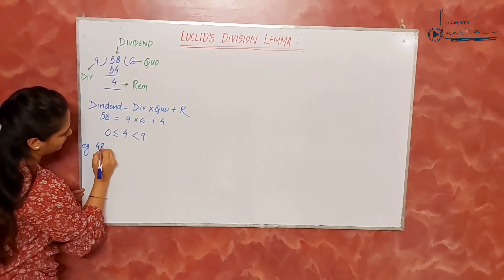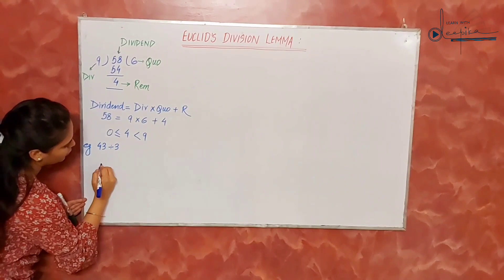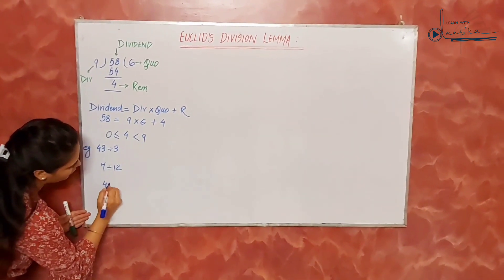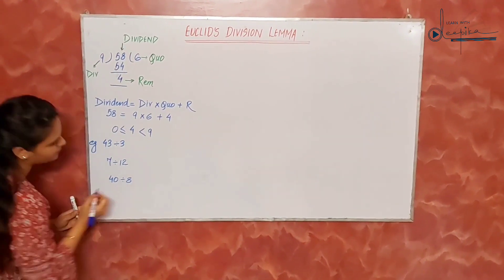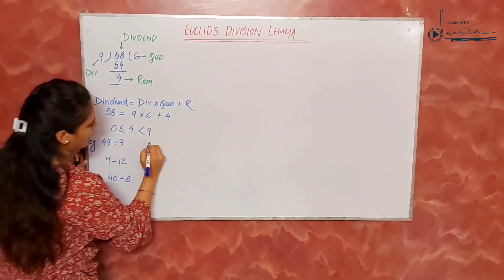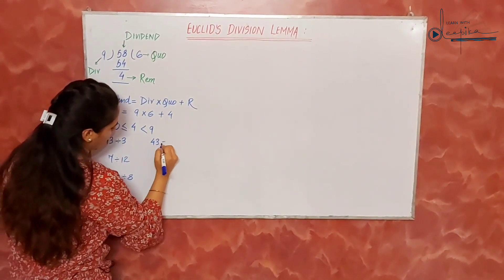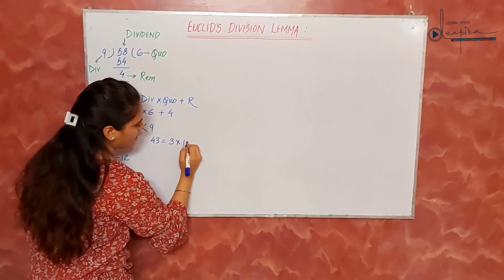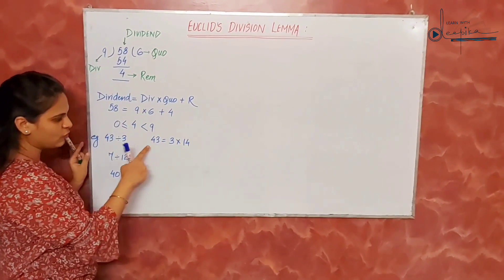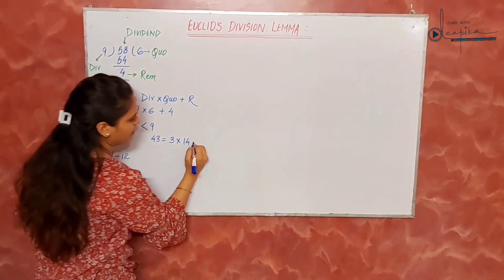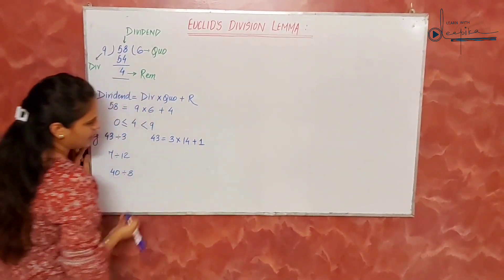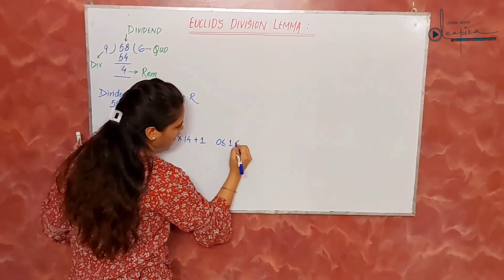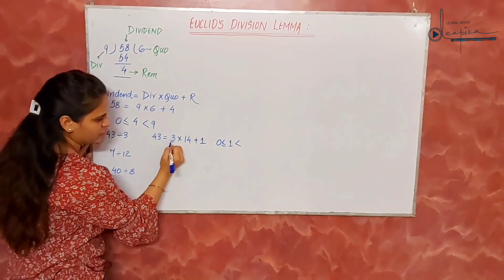Let's take a few more examples: 43 divided by 3, and 7 divided by 12, and 40 divided by 8. For 43 divided by 3: 3 into 14 is 42, so remainder is 1. The remainder is greater than or equal to 0 but less than the divisor, which is 3.